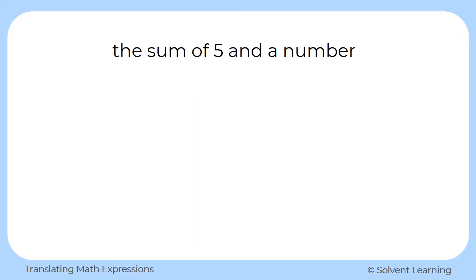First, we have the sum of five and a number. Sum of refers to addition, so we know we're going to be adding something together. We're going to add five and some unknown number, and that unknown number will be represented by a variable. You can use whatever letter you want to represent that variable. Here I used x, so I have five plus x. This represents the sum of five and a number.